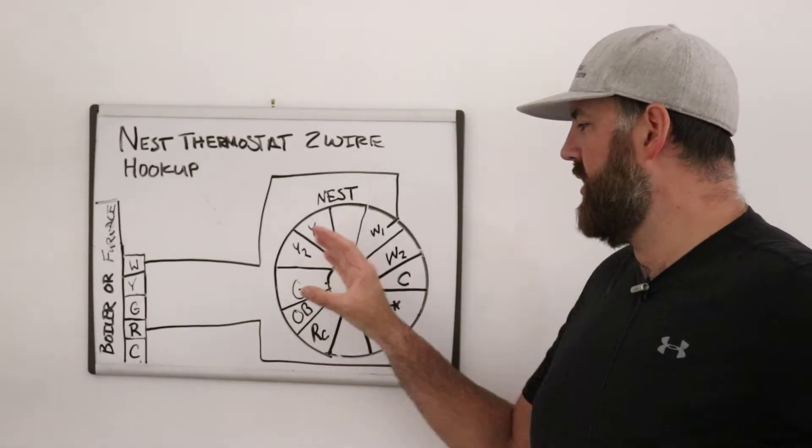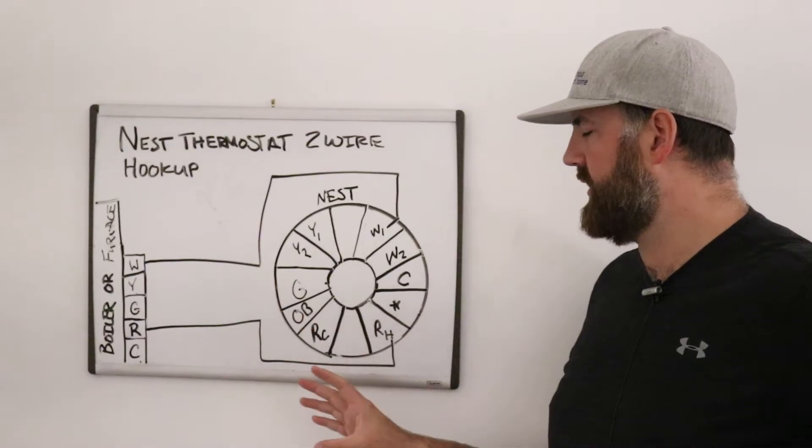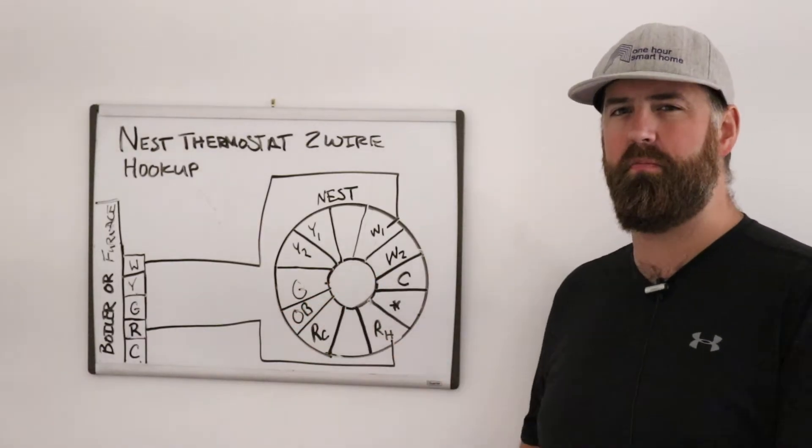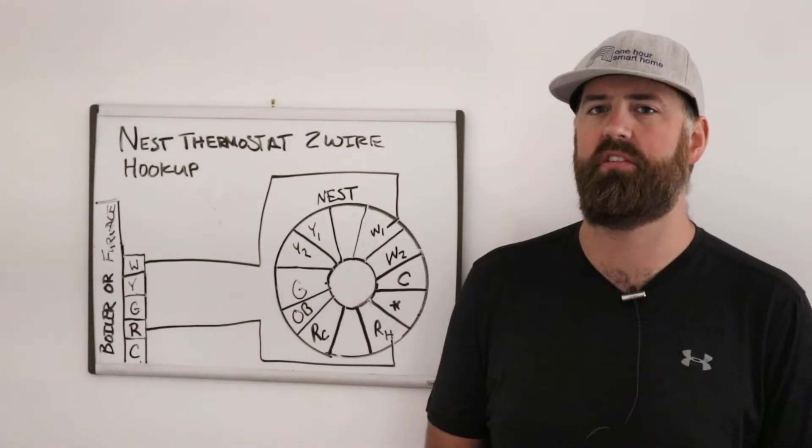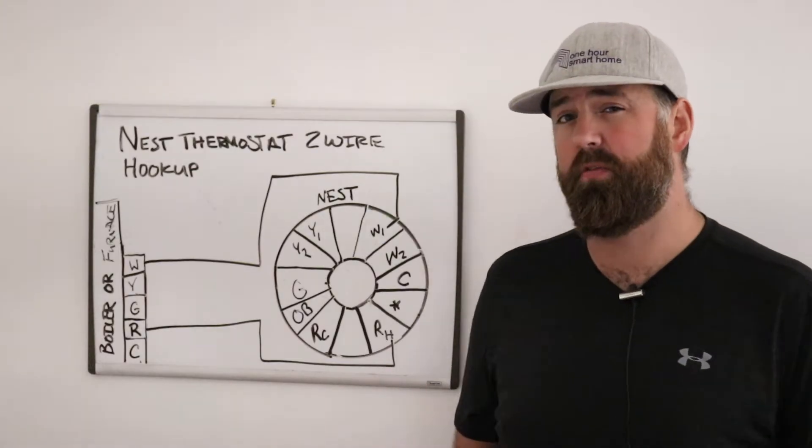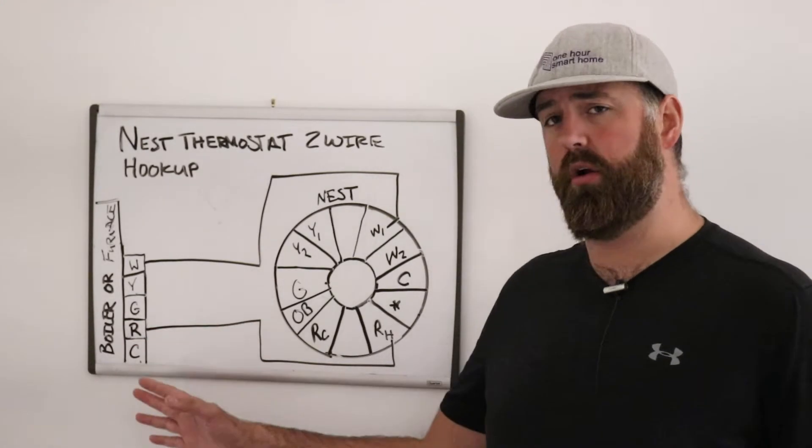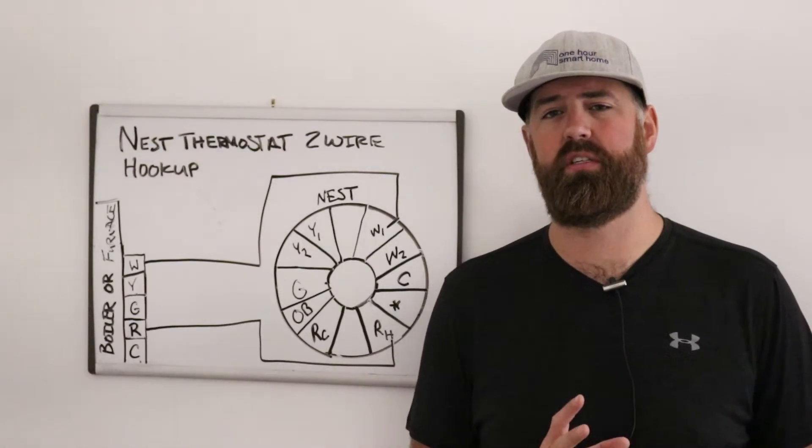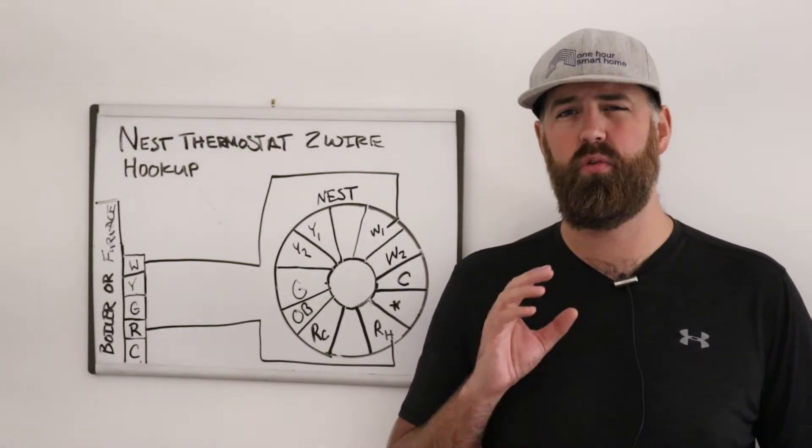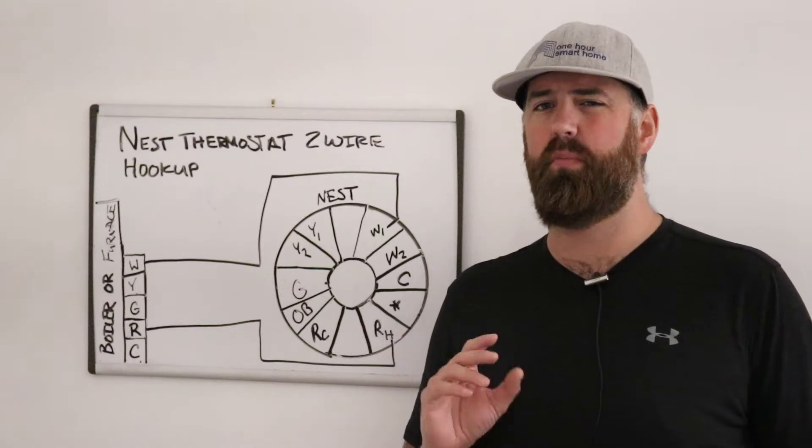Now to understand kind of how a thermostat works and how this wiring diagram works, I'm going to give you a little bit of a background on HVAC systems. So typically if you have a two wire system, what you have is either a boiler or a heat only system. It's possible you have a cooling only system, but very rare.